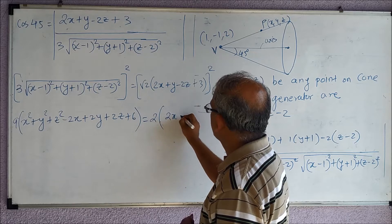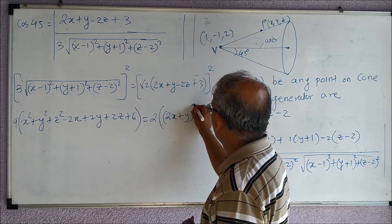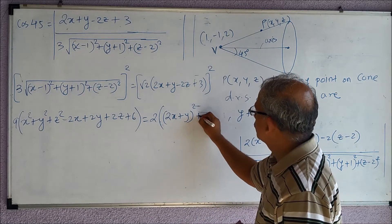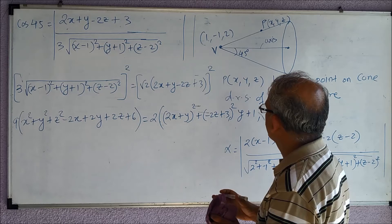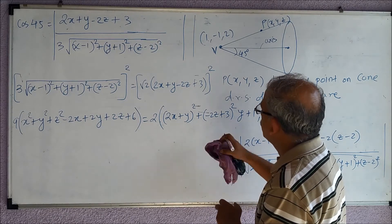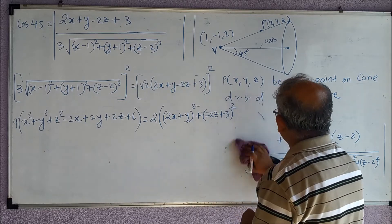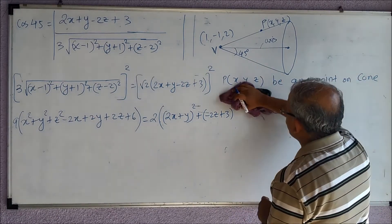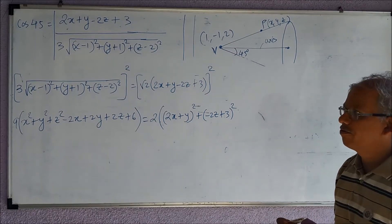Now this square we will make to open. So what I will do is I will take (2x + y)² + (-2z + 3)², so this I am considering as a and this is b, we need to do that because we need to write down the equation of the cone in a simplified form.